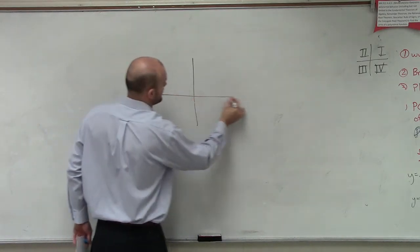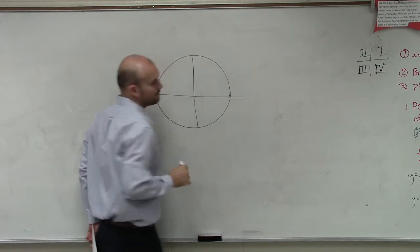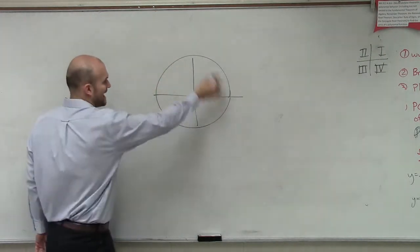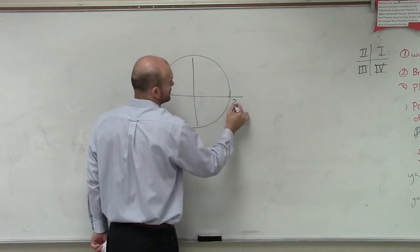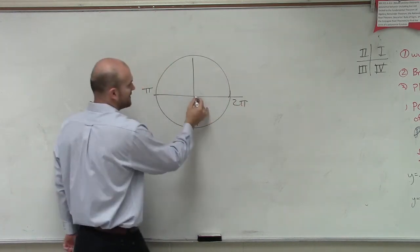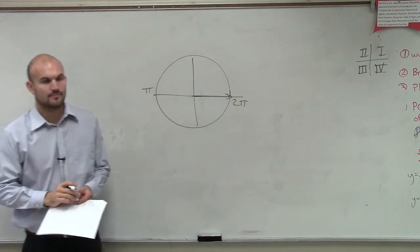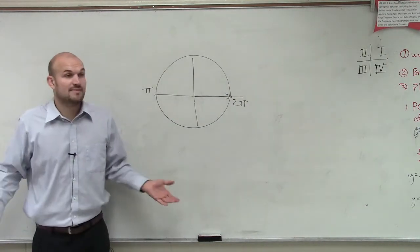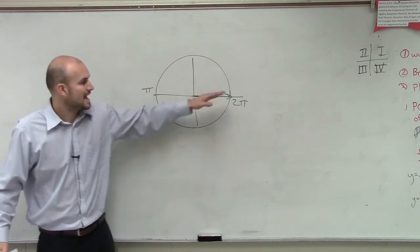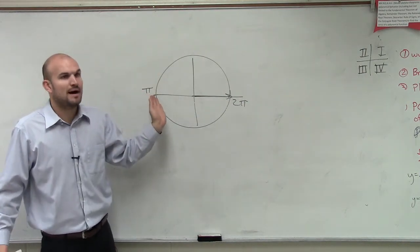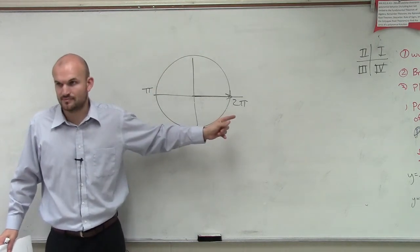Can you agree with me that if given a circle with a radius of 1, that halfway around the circle is pi, and all the way around the circle is 2 pi? If I start at my initial side here, it doesn't matter what the radius is. However, for my radius, halfway around my circle is going to be pi radians. All the way around the circle is going to be 2 pi radians.